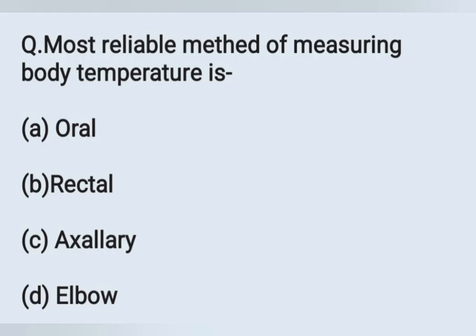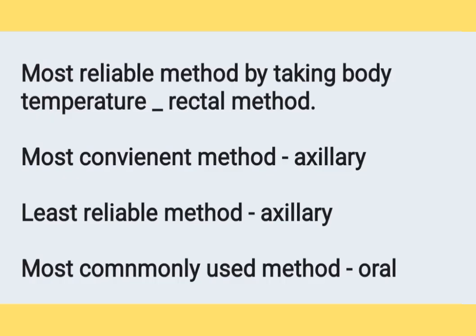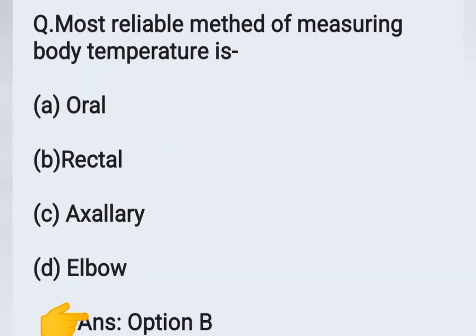The next question: the most reliable method of measuring body temperature is. Options: A - oral, B - rectal, C - axillary, D - elbow. The most reliable method of taking body temperature is the rectal method. The most convenient method is the axillary method. The least reliable method is also the axillary method. The most commonly used method is oral. Here the most reliable method is rectal. Option B is the correct answer.